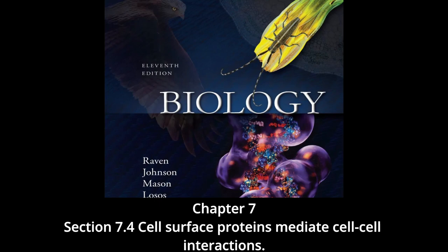Not all physical contacts between cells in a multicellular organism are fleeting — most cells are in physical contact with other cells at all times, usually as members of organized tissues such as those in the lungs, heart, or gut. These cells form long-lasting or permanent connections called cell junctions. The nature of the physical connections between cells largely determines what the tissue is like; a tissue's proper functioning depends critically on how individual cells are arranged, just as a house cannot maintain structure without nails and cement.